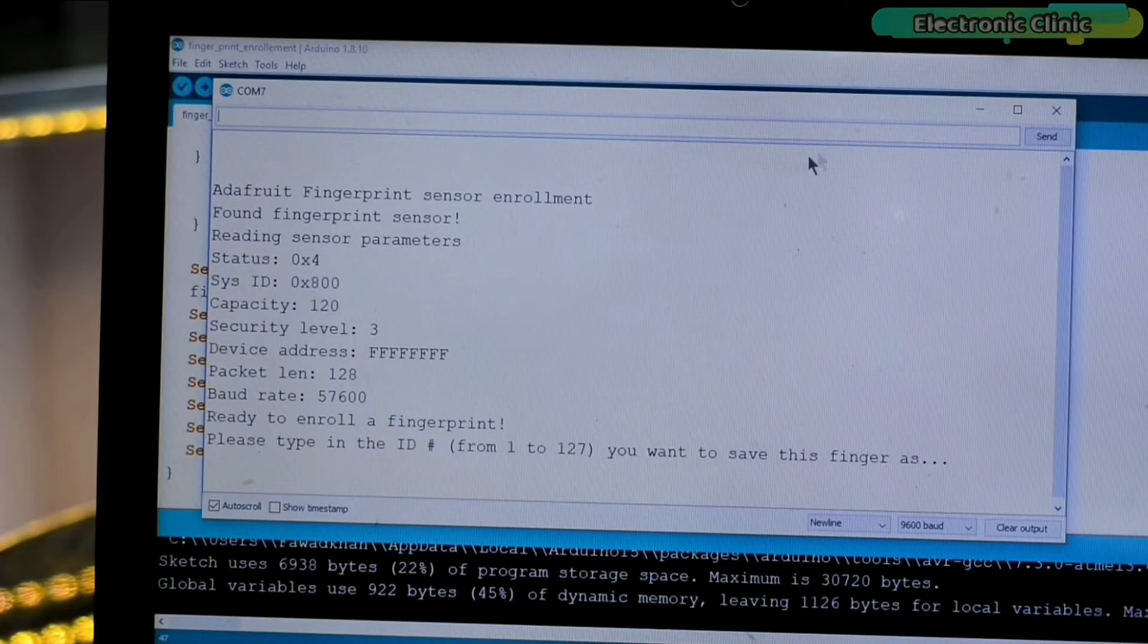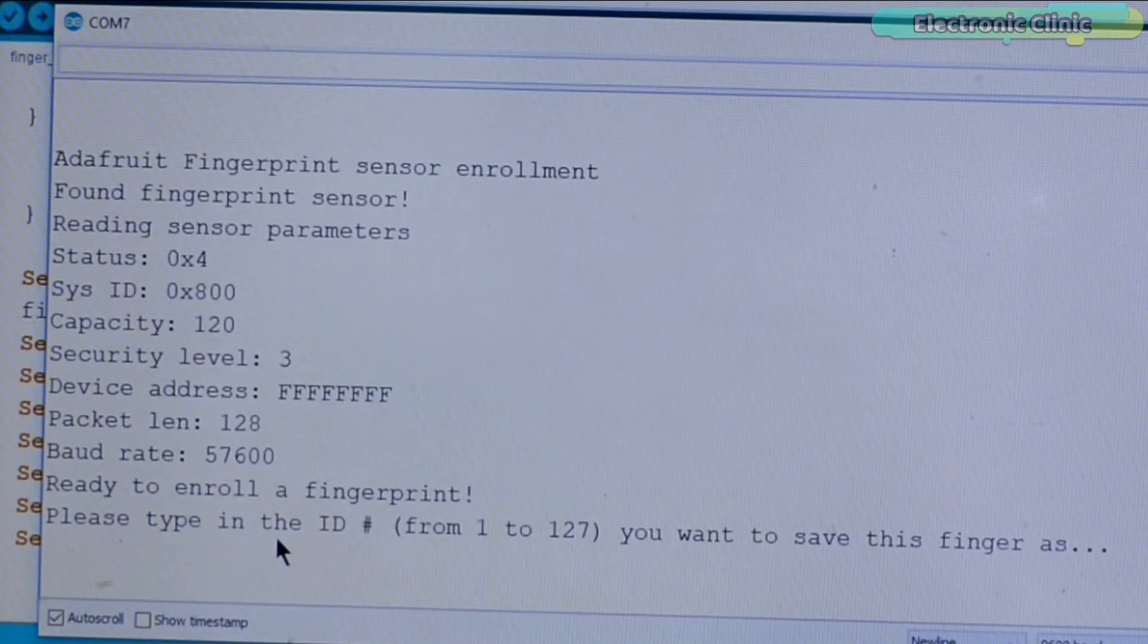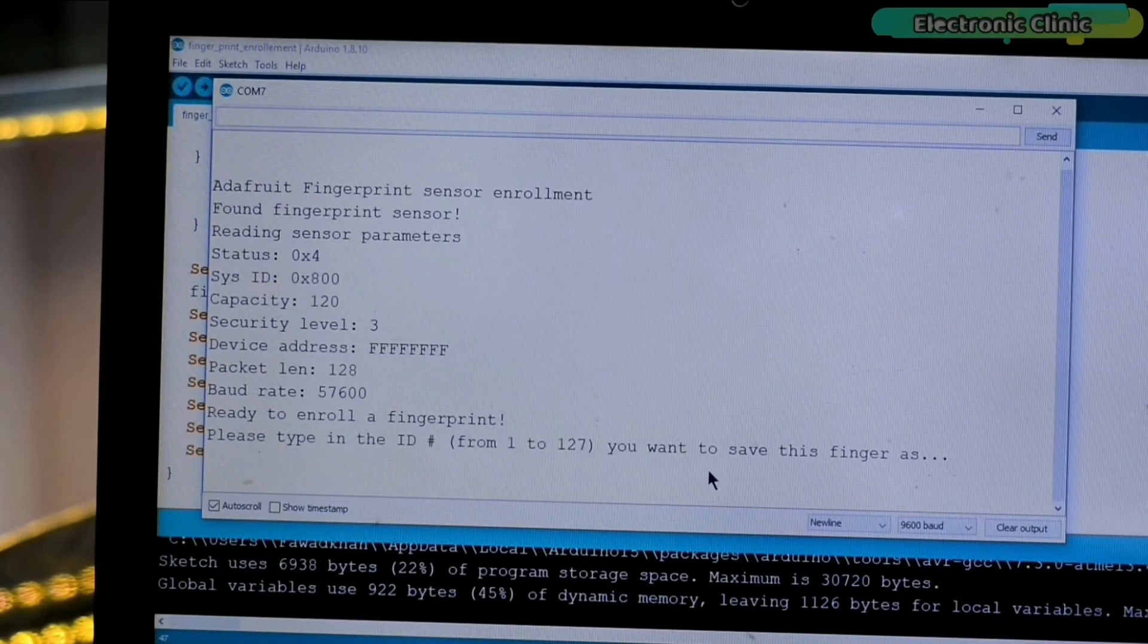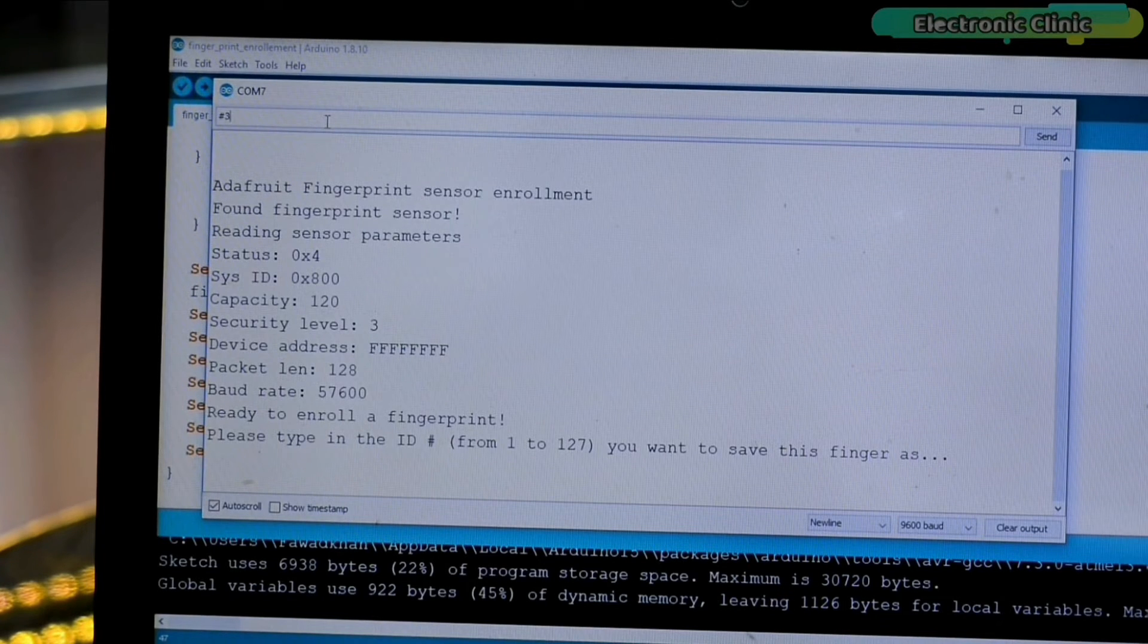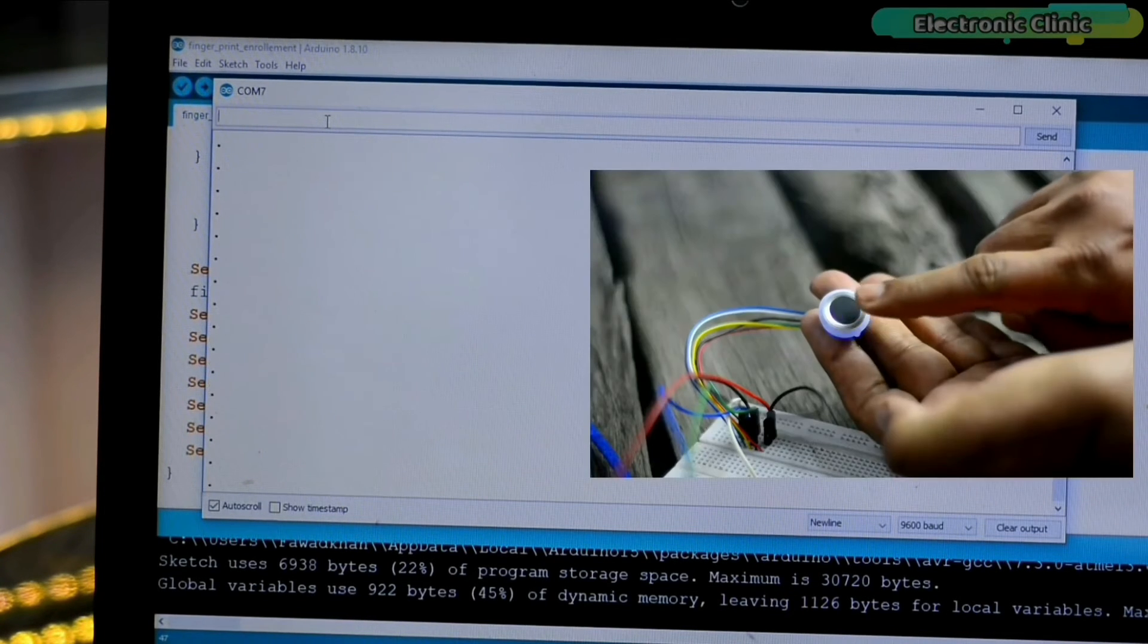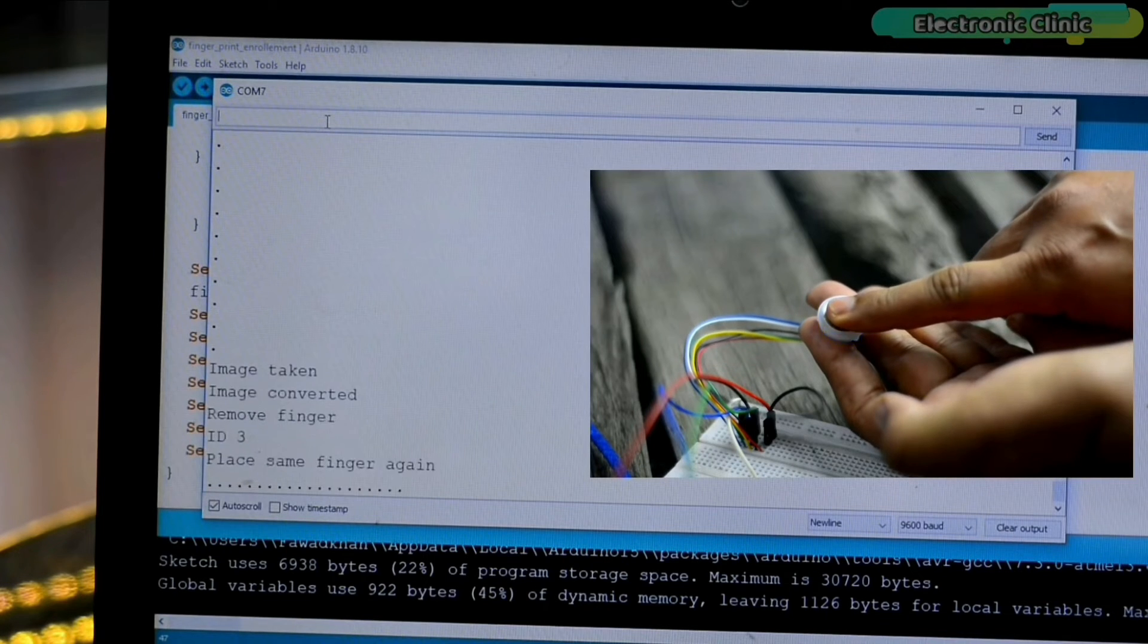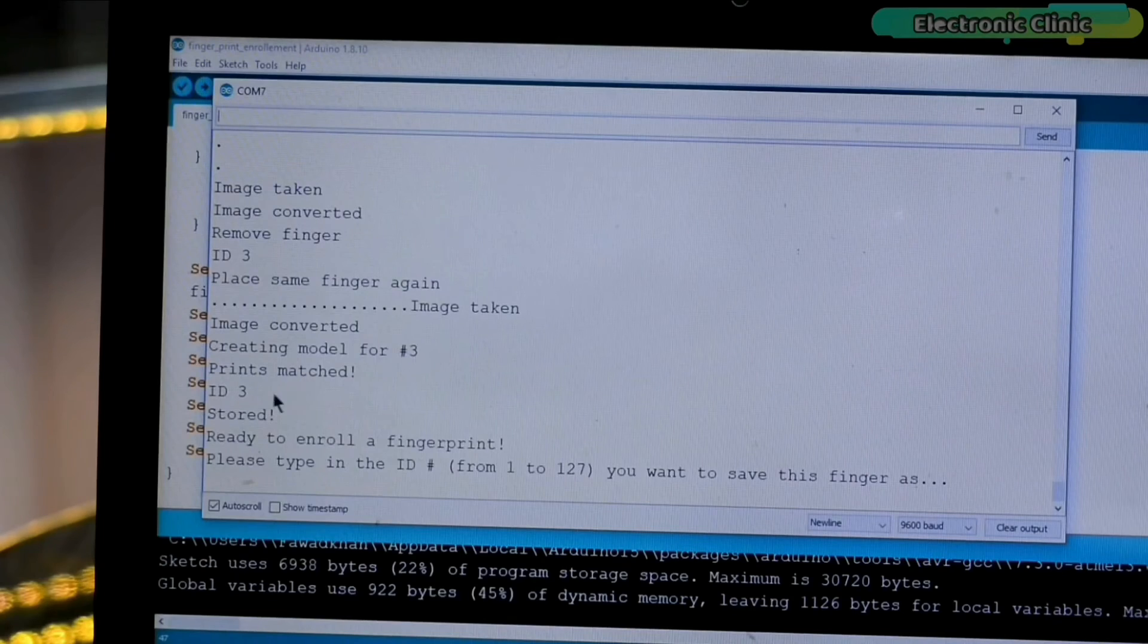Next, open the serial monitor and follow the instructions. Right now, it's saying please type in the ID number from 1 to 127 you want to save this finger as. So, I'm going to type 3. Now, I can place my finger. I'm going to place the same finger again. Now, my finger is enrolled and its ID is 3.